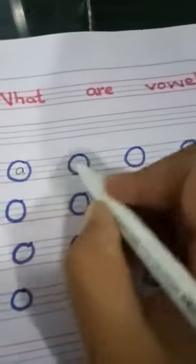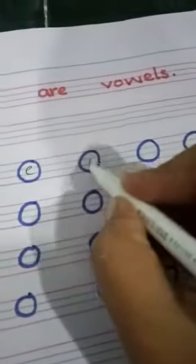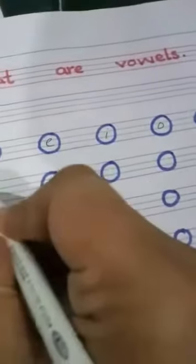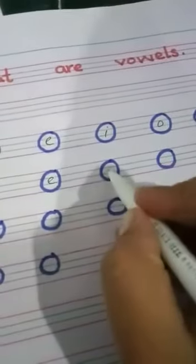So we write here like this: A, E, I, O, U. A, E, I, O, U.